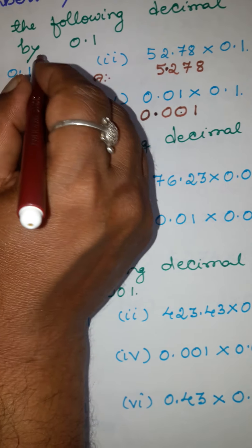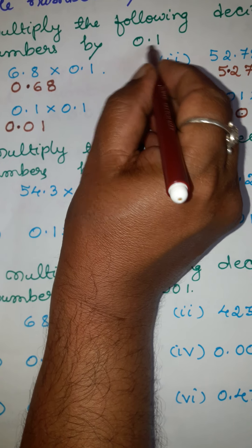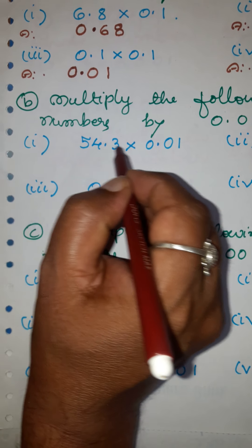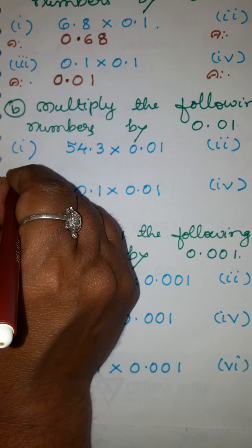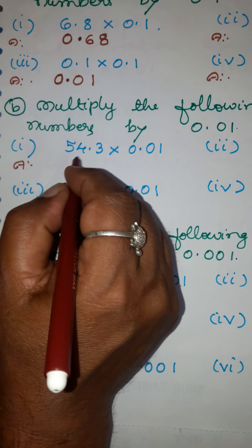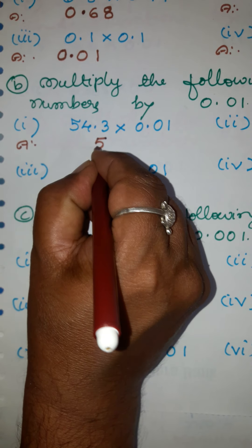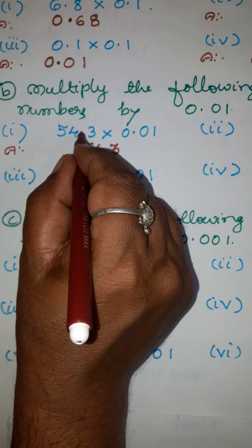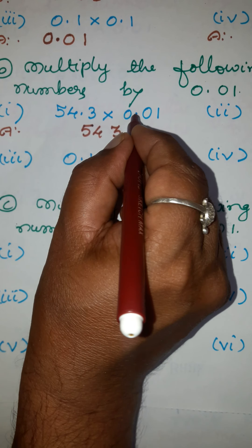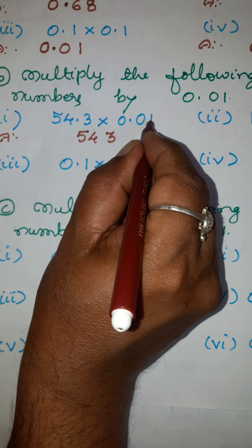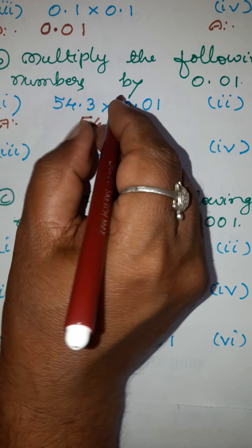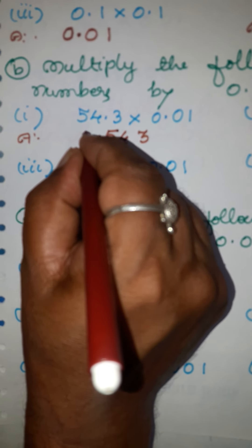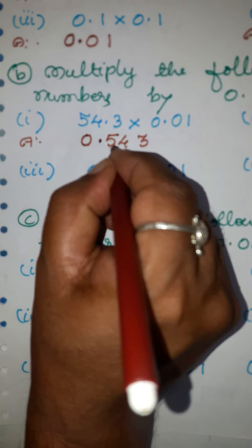So you have learned how to multiply a decimal by 0.1 and another decimal by 0.1. Now in the second section, you are going to multiply decimal numbers by 0.01. Write this number as 5543, ignoring the decimal point. After the decimal in this number there is one place; here after the decimal there are two places. Two plus one is three. Move three places from right to left — one, two, three — and put the decimal point. It is customary to put a zero here. The answer is 0.543.